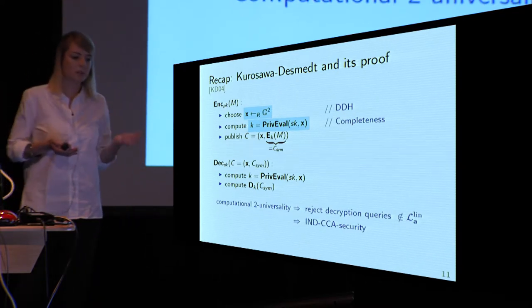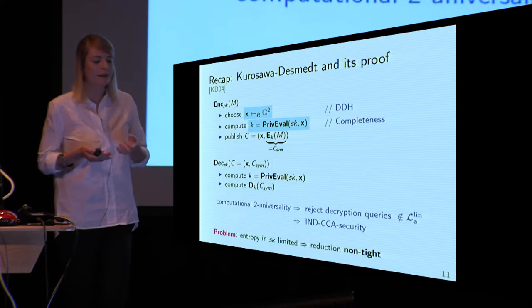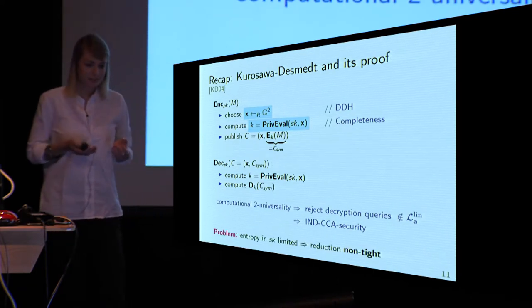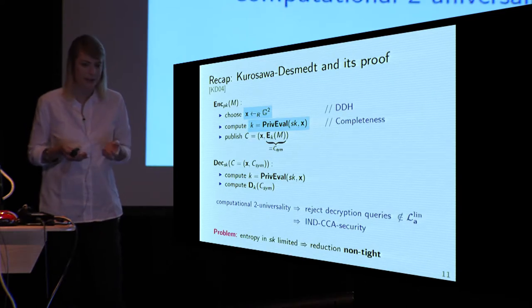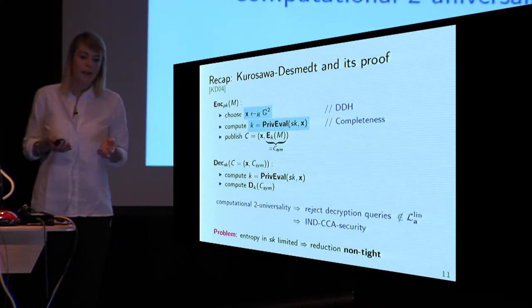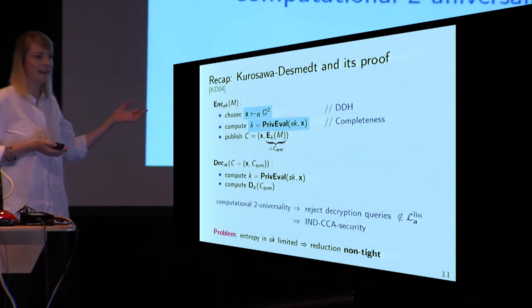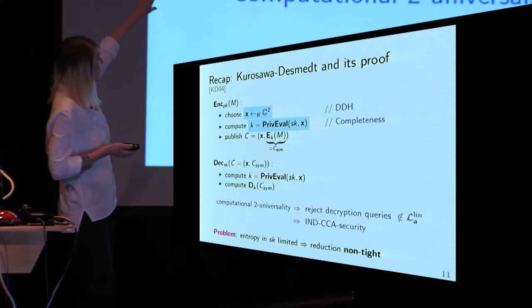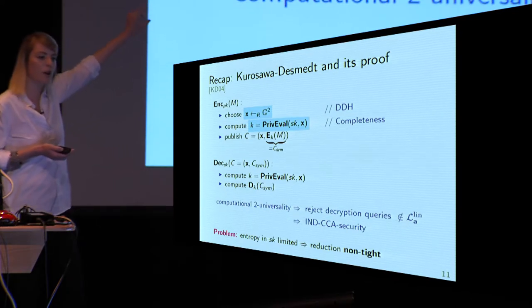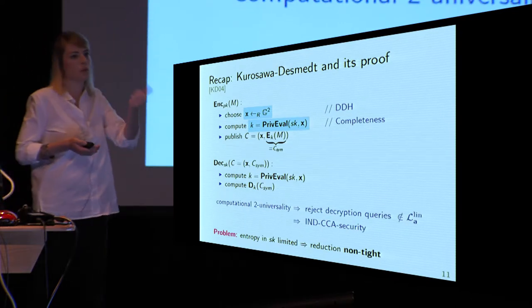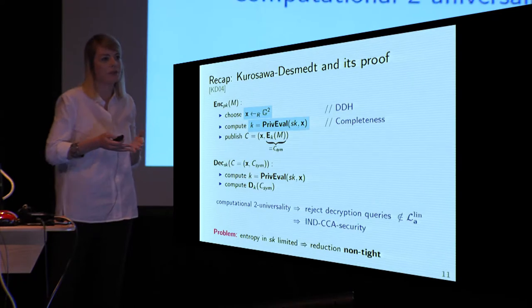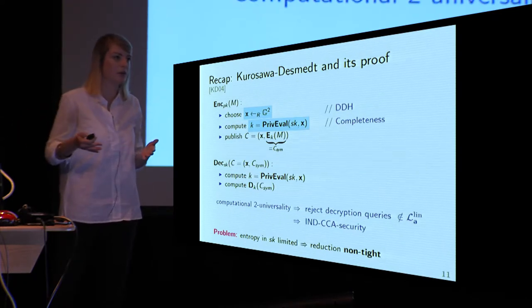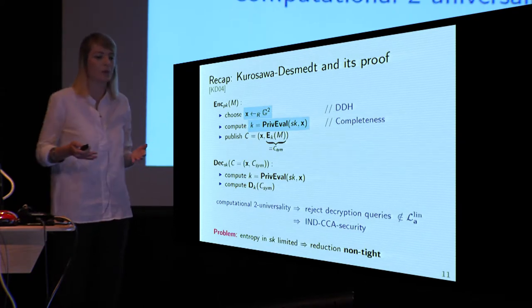So this is great. But if we care about tight security, the problem is that entropy in the secret key is limited, so this reduction cannot be tight. Why? Because we relied on giving out information about only the one challenge ciphertext's key. But if we do that many, many times, we don't have security guarantees anymore — we only have two-universality, but not more.